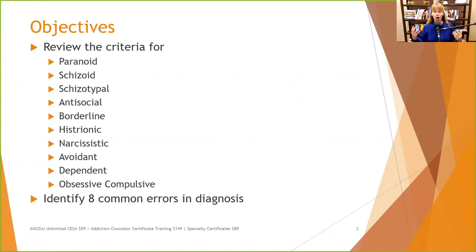We're going to briefly look at all of the personality disorders and identify eight common errors. It seems like clinicians either diagnose them all the time or don't go near them at all. And since we're not doing the five-axis diagnosis anymore, it's even easier to skip that — it used to be a glaring issue if you didn't have an Axis II.